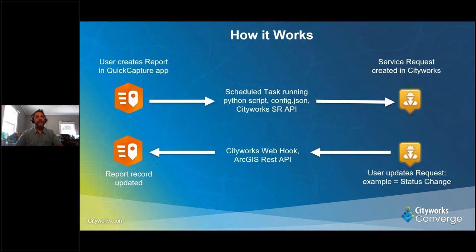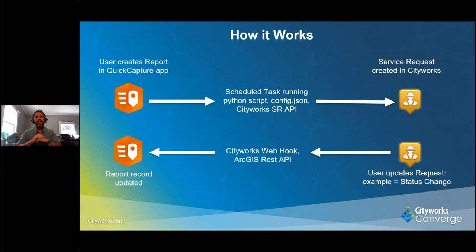So how does this actually work? It starts with the user creating a new report in the Quick Capture app. They can add an image and any additional information required by the app's configuration for that use case. They can view it, make sure the location is correct, adjust if needed, and then quickly click submit. In the background, a scheduled Python script with an associated configuration file takes that information, packages it up, and using the Cityworks Service Request API, pushes that request into Cityworks, so a new request is created with all that information.